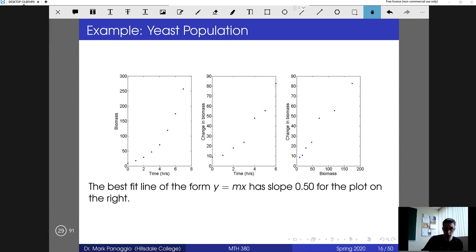If you use your computer you could do some sort of linear regression and fit a line y equals mx to that. What you would find is actually the slope of that line on the right would be around one half. So delta p should be approximately 0.5 times p_n, which means p_{n+1} should be approximately the old value p_n plus the change, which if we simplify it would be just 1.5 times p_n. This means that every hour the new population is going to be about 50 percent higher than the previous population.